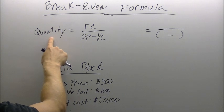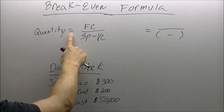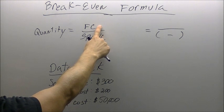The formula is going to go, the quantity we need to sell is going to be equal to FC, our fixed cost,